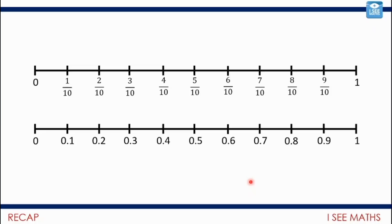That's an adjustment of how we count in ones, and it's very similar to counting in tenths: 1 tenth, 2 tenths, 3 tenths and so on. So 3 tenths and 0.3, for example, are equivalent.